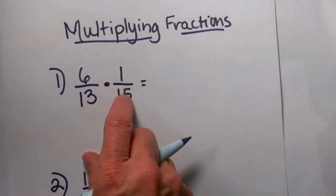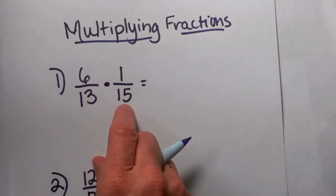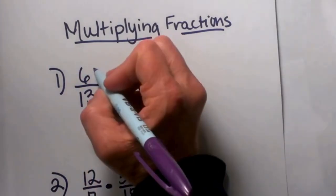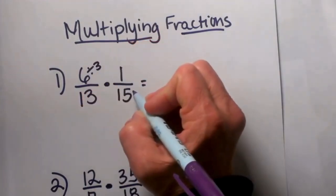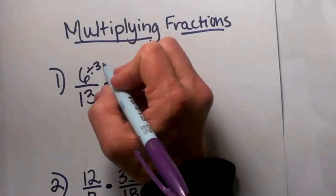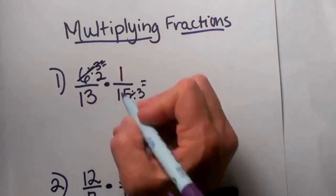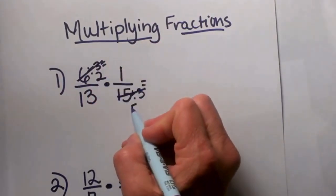Well, 6 does not go evenly into 15, but 6 and 15 have a common factor of 3. So I am going to divide 6 by 3 and I am going to divide 15 by 3, and that is going to give me a 2 in the numerator and a 5 in the denominator.